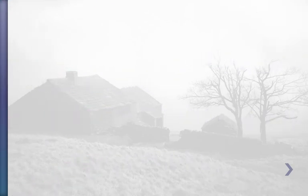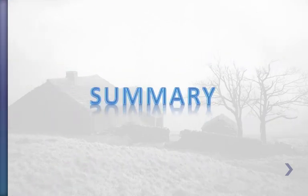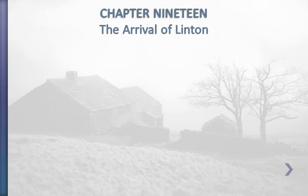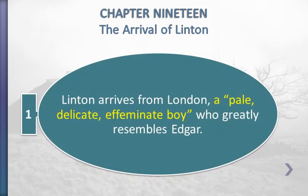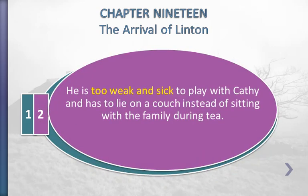Moving on to the summary of chapter 19: the most important point is the arrival of Linton. Linton arrives from London — a very delicate, effeminate boy who greatly resembles Edgar. He is too weak and sick to play with Kathy and has to lie on a couch instead of sitting with the family during tea.